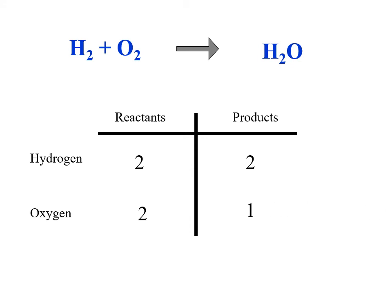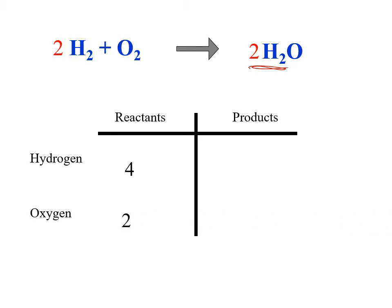We're going to have to balance this equation. We can't just put a 2 in the middle — the coefficient has to go out front. So if we put a 2 in front of H2O on the right, our oxygens look good, but we've doubled our hydrogens, which were previously balanced. So we put a 2 in front of H2 on the left: four hydrogens on the left, four hydrogens on the right, two oxygens on the left, two oxygens on the right — the equation is balanced.